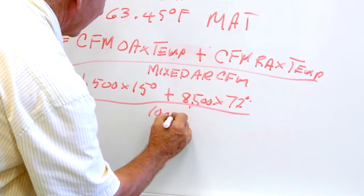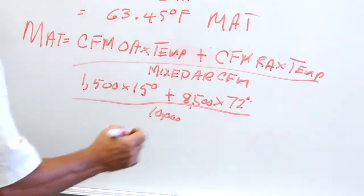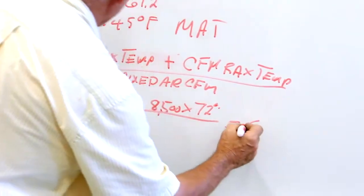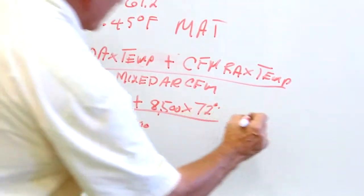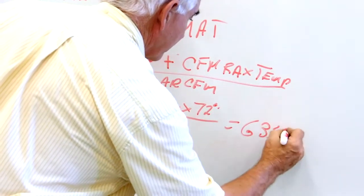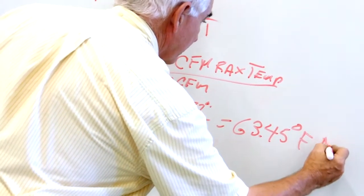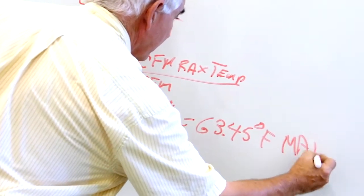And if you work that out, you'll get the same 63.45 degrees Fahrenheit mixed air temperature.